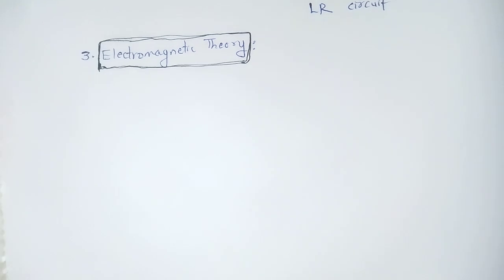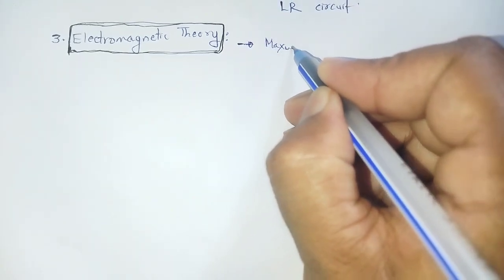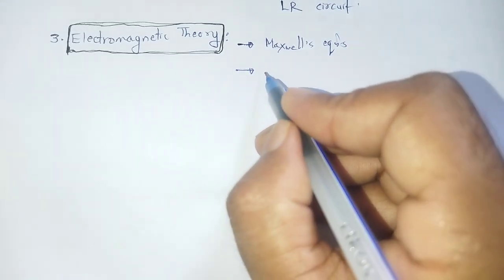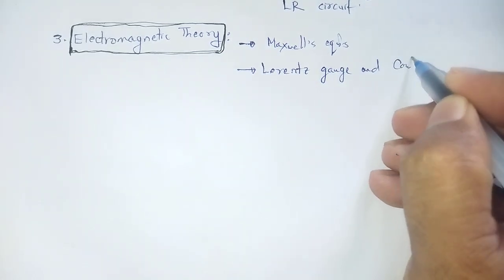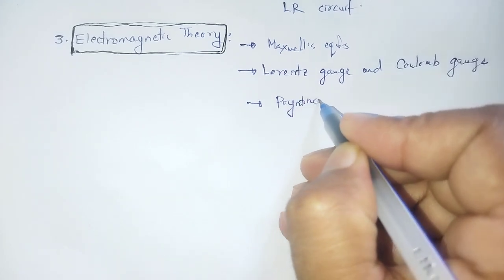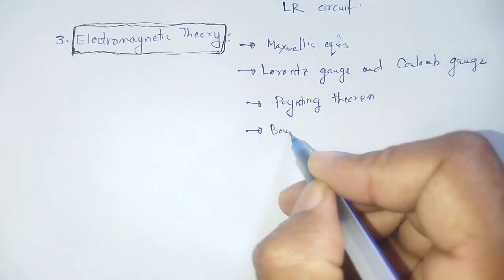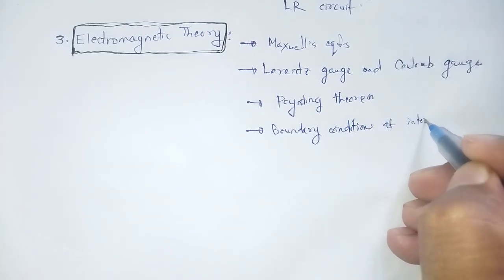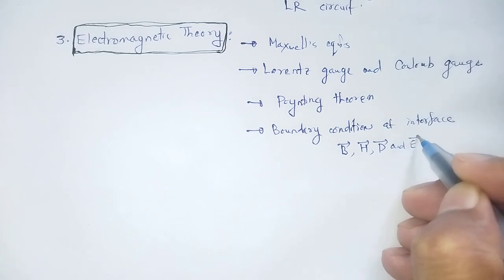Next, Electromagnetic Theory core paper. What are the important topics? Maxwell's equations. Poynting theorem and boundary conditions at interface. Boundary conditions involving B vector, H vector, D vector, and E vector.